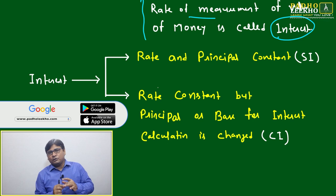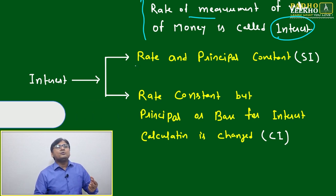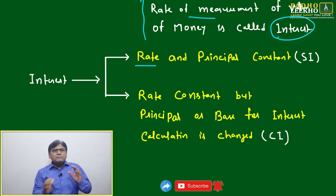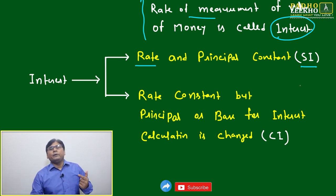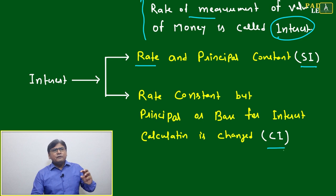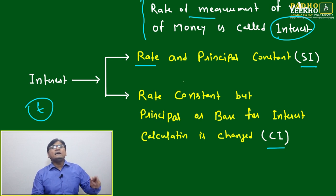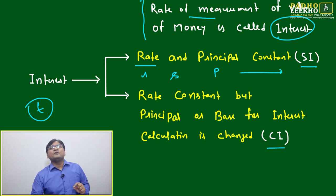We have three variables: principal amount P, time period T, and rate R — that is, how the rate is changing with time. Based on these three variables, we can divide interest into two types: Simple Interest (SI) and Compound Interest (CI). If time T is constant for both, then we are left with two variables: rate R and principal amount P.